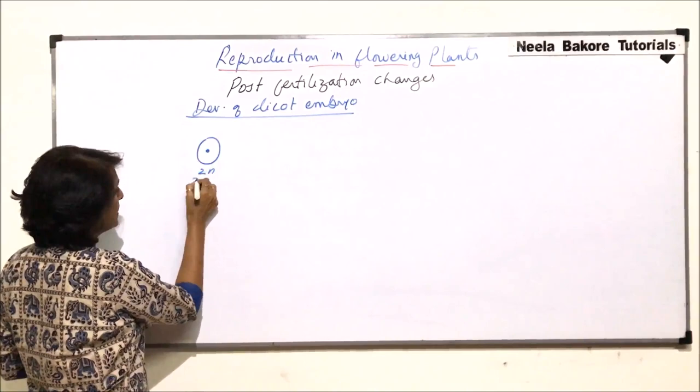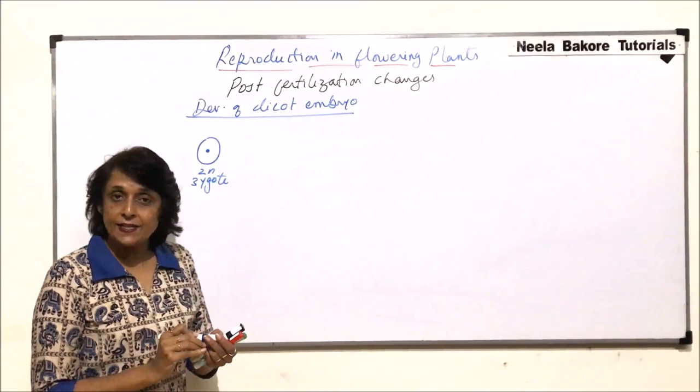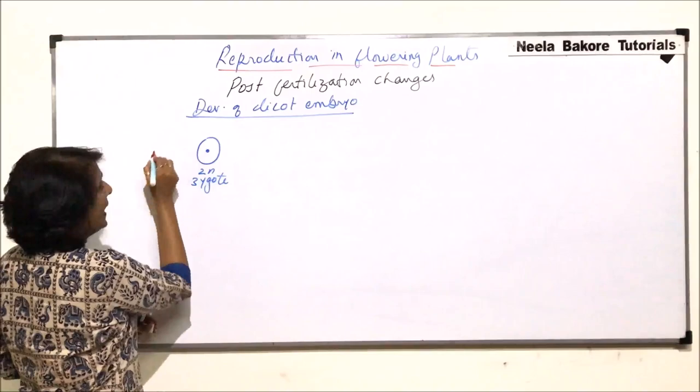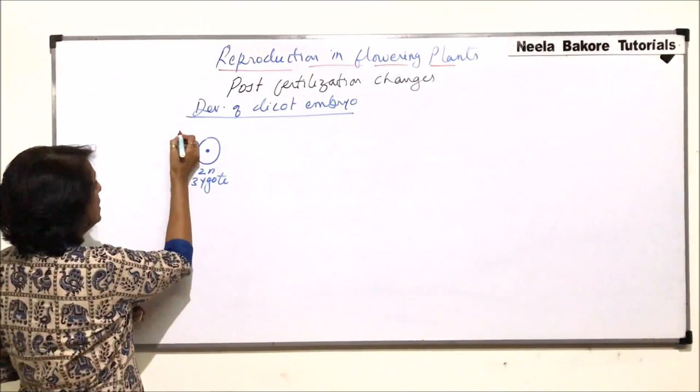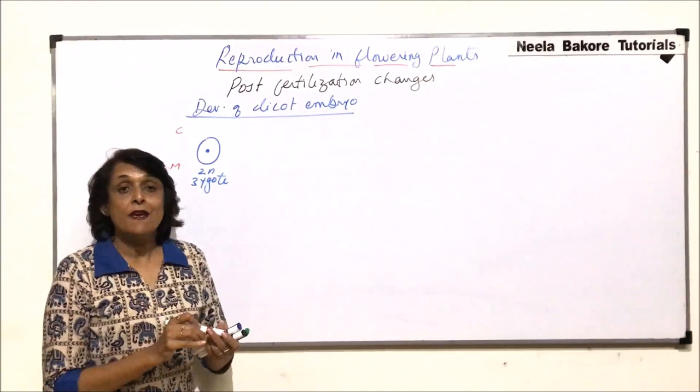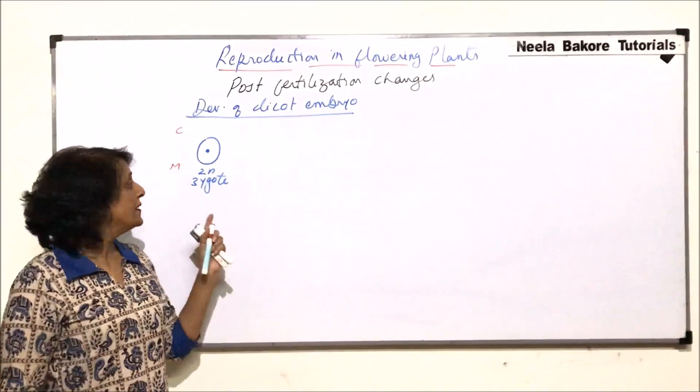This zygote is formed as a result of fertilization — one male gamete and an egg have fused to form this structure. For our reference we always mention the sides: this is the chalaza end and here is the micropyle end, because when we talk about the cells and their names it is in reference to these sites.